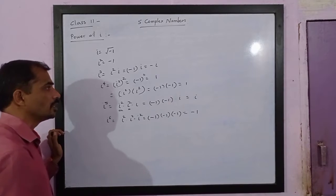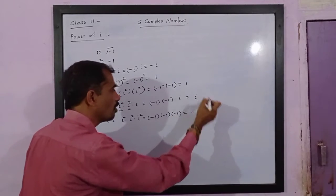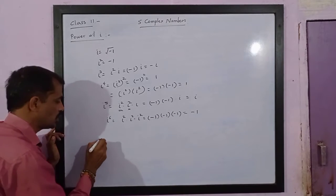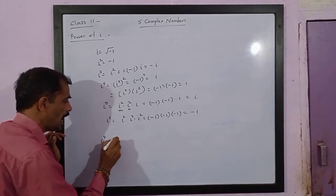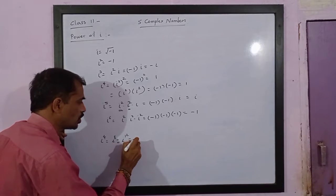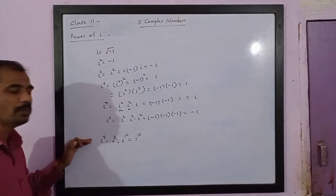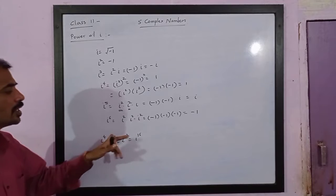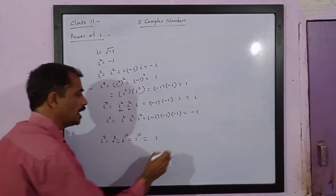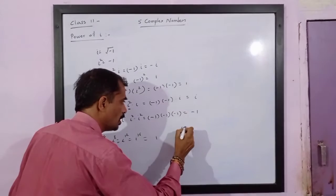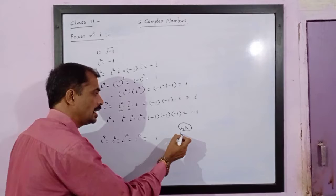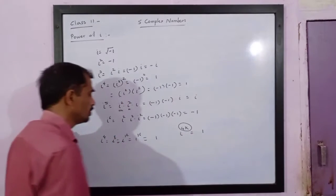Please note, the values are repeating. You will notice that values go on repeating, and for every i raised to 4, then i raised to 8, i raised to 12, i raised to 16 — these are multiples of 4, the powers are multiples of 4. You will notice the value is 1. So you can say, if i is raised to a power 4k where k is any positive integer, the value is always 1.